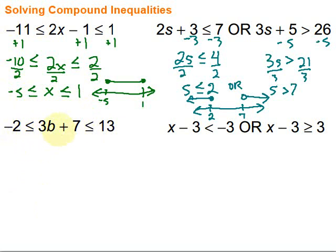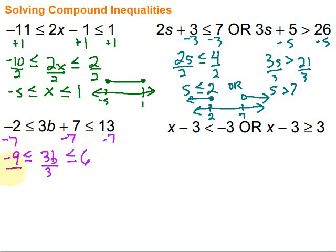Let's take a look at this third example to show how that AND overlap works. I can solve it by working on all three pieces at once. There's a plus 7 with the variable, so I subtract 7 from all three pieces. On the left, we get negative 9; in the middle, we're left with 3b; on the right, 13 minus 7 is 6. Then to get b by itself, divide all three by 3. We get negative 3 is less than or equal to b, less than or equal to 2.